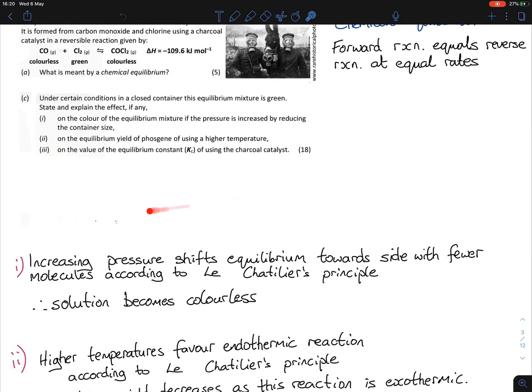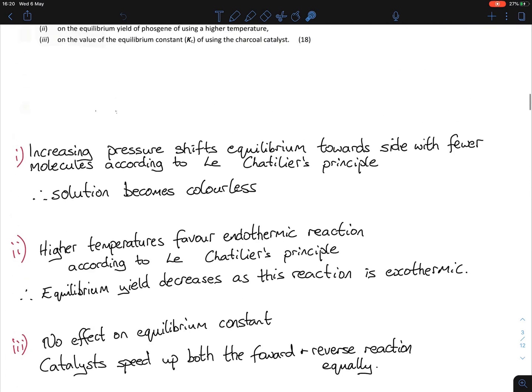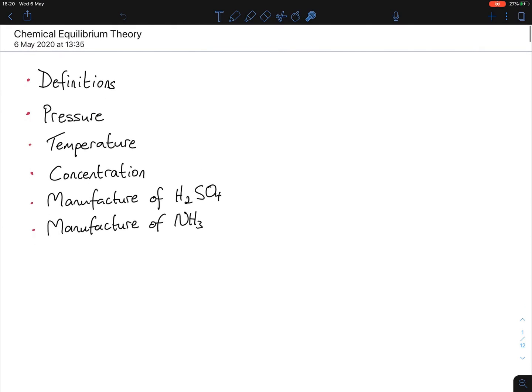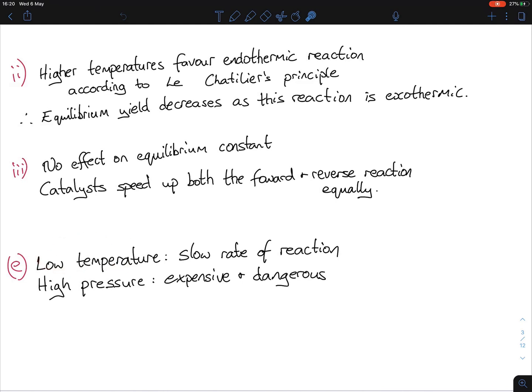It's a dynamic reaction, so even though it's speeding up the forward reaction, it's speeding up the reverse reaction as well. Only temperature affects the Kc. Part E asks why low temperatures and high pressure are not suitable for the production of these chemicals. You'll see that a lot for the manufacture of sulfuric acid via the contact process or the manufacture of NH3 via the Haber process. Low temperatures might increase the yield but they'll have a slow rate of reaction which is expensive. High pressure is actually expensive to run because you need specialist equipment.